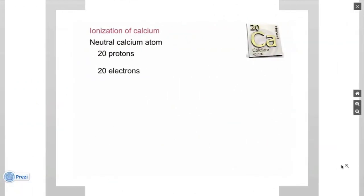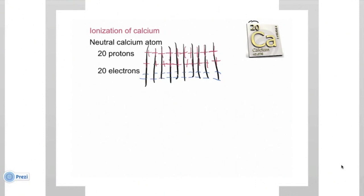If we find calcium in the periodic table, it has an atomic number of 20, so it has 20 protons. And since it's neutral, we know that it has 20 electrons. And the 20 positive protons and 20 negative electrons cancel each other out, giving us an overall net charge of 0.